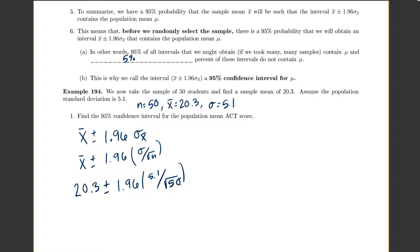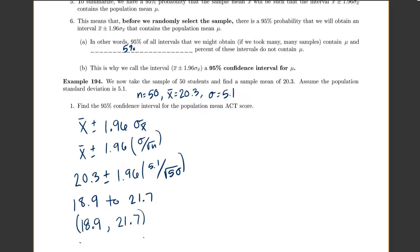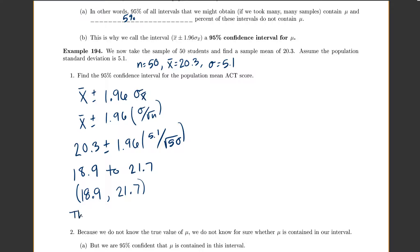If we haven't done a plus or minus in this class yet, you'll really just put in your calculator 20.3 minus 1.96 times 5.1 divided by the square root of 50. And you'll get 18.9. And then if you do a plus instead, you get 21.7. And in this class, we'll usually write it in interval notation, so we'll write 18.9 comma 21.7. So, the 95% confidence interval is 18.9 to 21.7.